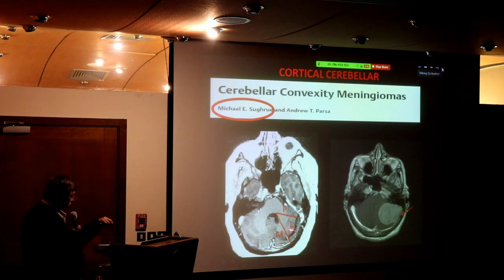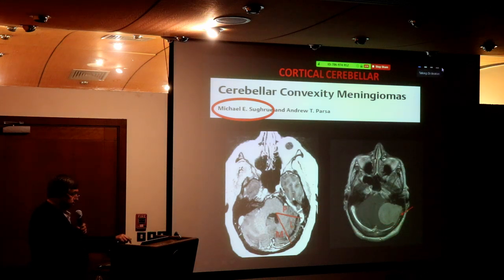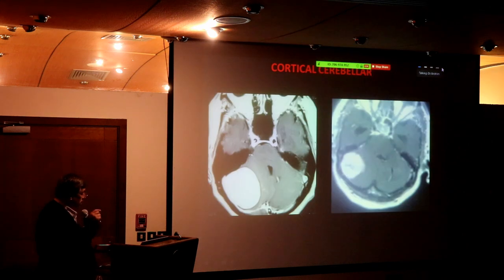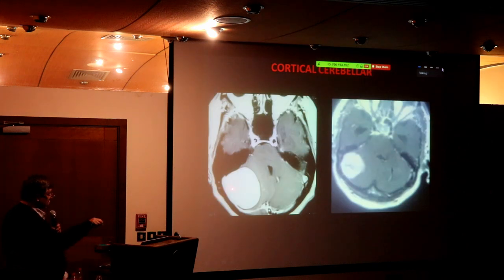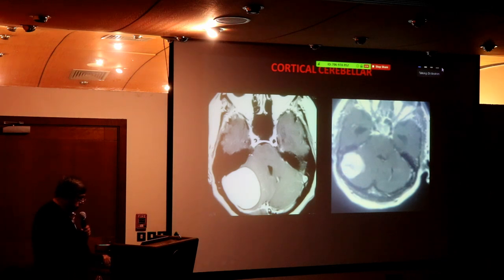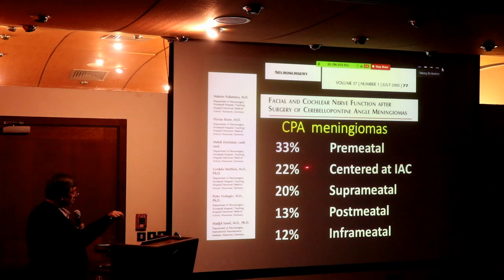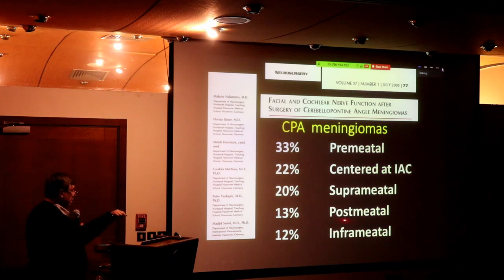Cerebellar convexity meningioma is cortical — it is not petroclival. Majid Samii said cerebellopontine angle meningiomas are centered around the internal auditory meatus: either they are anterior to it, centered on it, or posterior to it. Post-meatal — behind the meatus — look at this; the meatus is here and the tumor is behind it. Centered over — the internal auditory meatus is centered, and these can be easily missed.